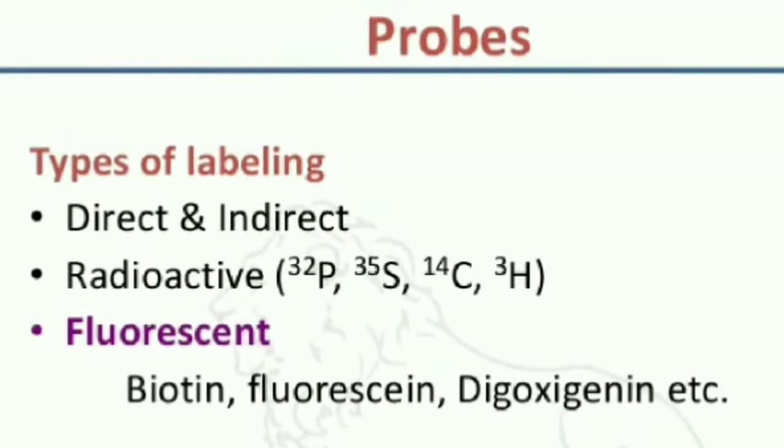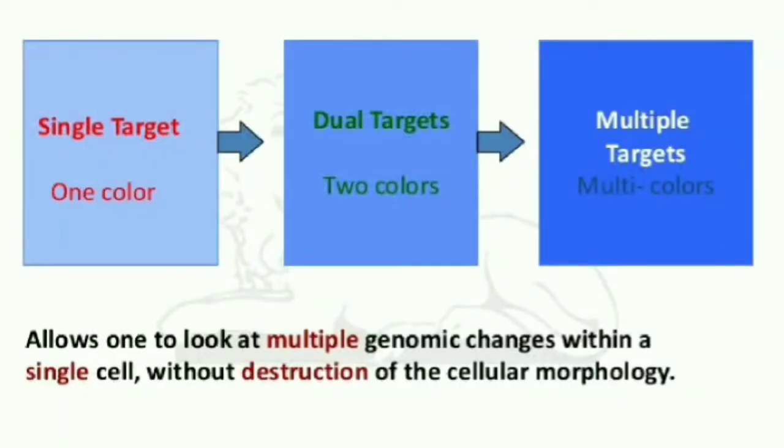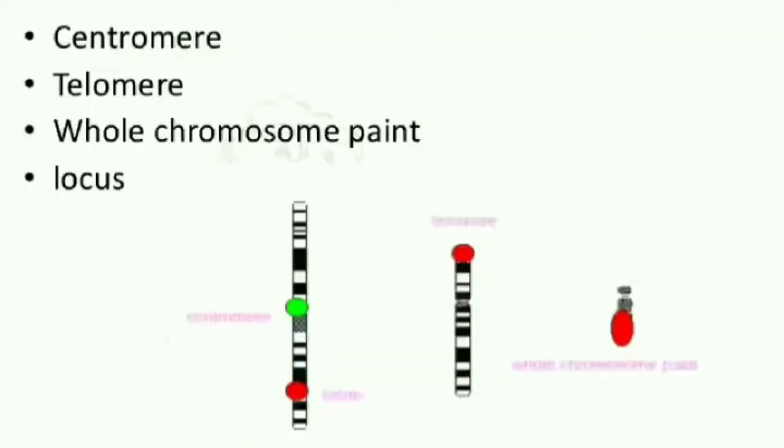There are three types: single target, which is based on one color; dual targets, which is based on two colors; and multiple targets, which is based on multiple colors. So this is how we can characterize FISH based on the detection.